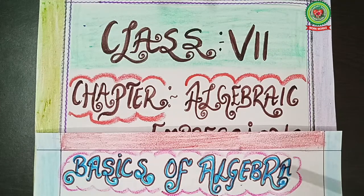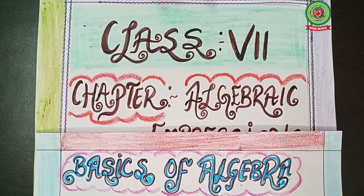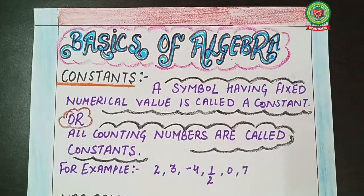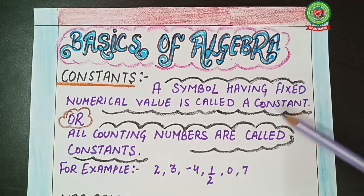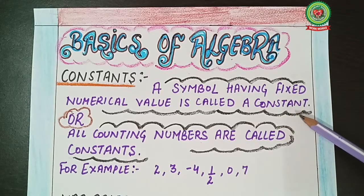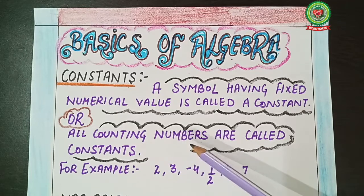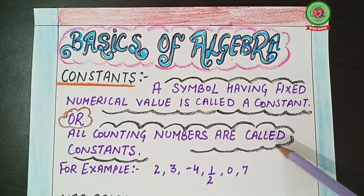Students, you have already done basics of algebra in sixth standard, so we will quickly recall all the terms related to this concept. First of all, we will talk about constants. A symbol having a fixed numerical value is called a constant. In simple language, all counting numbers are called constants.